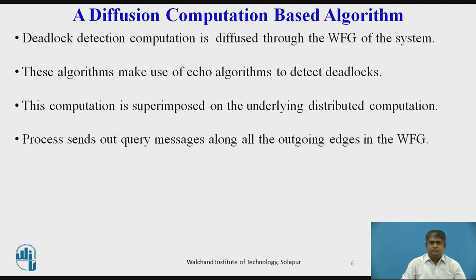In diffusion computation based distributed deadlock detection algorithms, deadlock detection computation is diffused through the wait-for graph of the system. These algorithms make use of echo algorithms to detect deadlocks. This computation is superimposed on the underlying distributed computation. If this computation terminates, the initiator declares a deadlock.